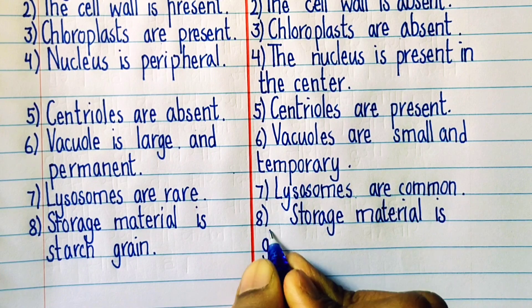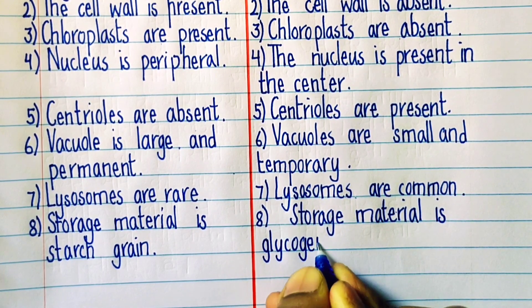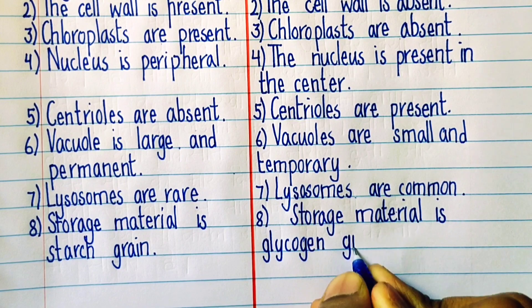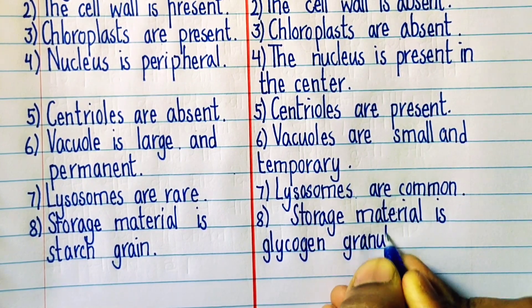Eighth point: Storage material is starch grain in case of plant cells, whereas in animal cells, the storage material is glycogen granules.